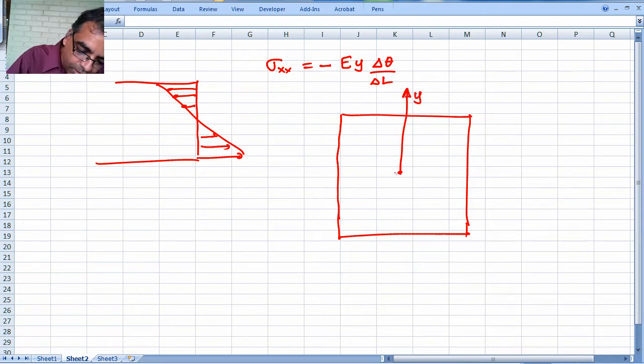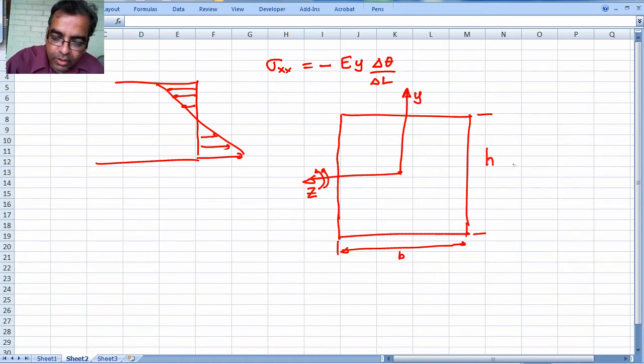If I look at the cross section, here is my cross section. Here is y, here is x, sorry z, and my moment is around the z axis. Let's say this is b, this is h - this is called the height of the beam, this is called the width. Notice that at each portion of the beam, suppose I divide it into a small area da somewhere here.